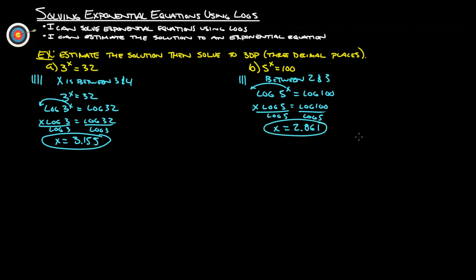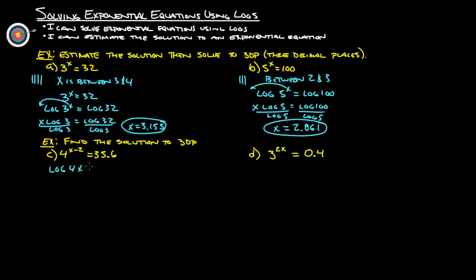So that is our estimation and solving using logarithms. All right, we move on to some more examples here. Find the solution to 3 decimal places. 4 to the (x minus 2) equals 35.6. So let's just log both sides. Log of 4^(x-2) equals log 35.6. This x minus 2 now can come out front.